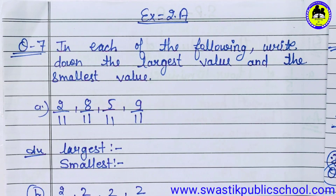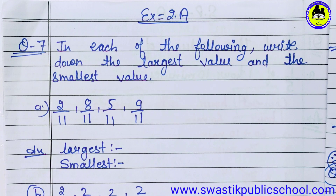Good morning students, welcome back to our online classes. In our previous class we completed question number six, and today we will start from question number seven of Exercise 2A. Question number seven: in each of the following, write down the largest value and smallest value.